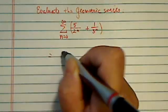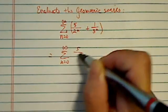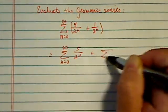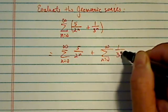Now with this geometric series, let's split it into two: 5 over 2^n, plus the second one, that's n equal to 0 to infinity, 1 over 3^n.